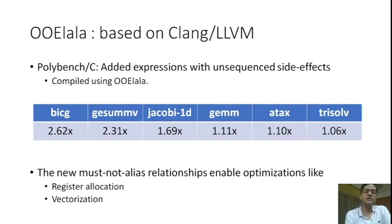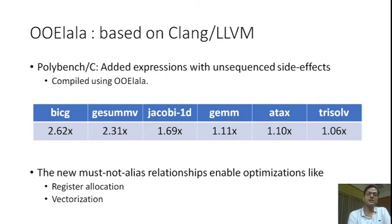To evaluate the optimization opportunity presented by inferring these extra must-not-alias relationships, we instrumented programs in Polybench C that were performance critical and had known must-not-alias relationships otherwise hidden from the compiler. We added expressions with unsequenced side effects to expose such relationships and compiled these programs using Oolala. Because Oolala identifies such must-not-alias relationships, the compiler was able to perform more optimizations, resulting in speedups of up to 2.6x over already optimized code.